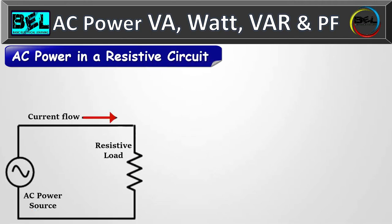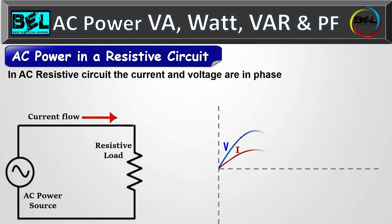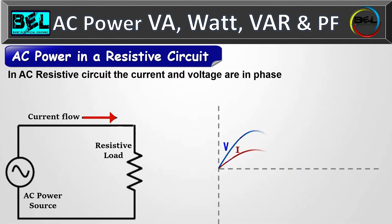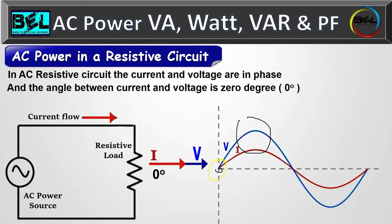In a purely resistive circuit, as you can see in the circuit diagram, there is only a resistive load connected to the AC power. In an AC resistive circuit, the current and voltage are in phase. In phase means when the voltage is at its maximum value the current is also at its maximum value, and when the voltage is zero the current is zero. The angle between the current and voltage is zero degrees.